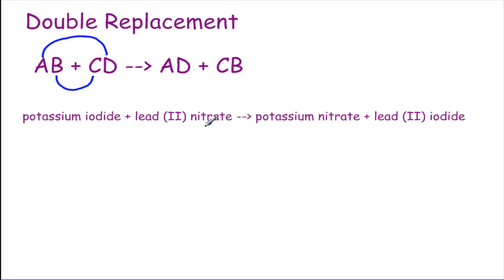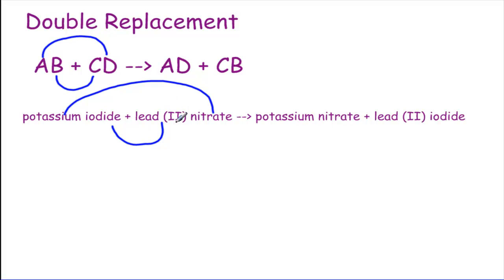If we look at an actual equation, this is one that we did in class with the yellow precipitate. Potassium goes over here with nitrate, so we get potassium nitrate. Lead 2 — when you have a transition metal and the Roman numeral, it stays with it. So lead 2 iodide. It's easiest to write the products when you have the names, but you've got to pay attention when writing formulas because you still have to go back to the whole charge thing.